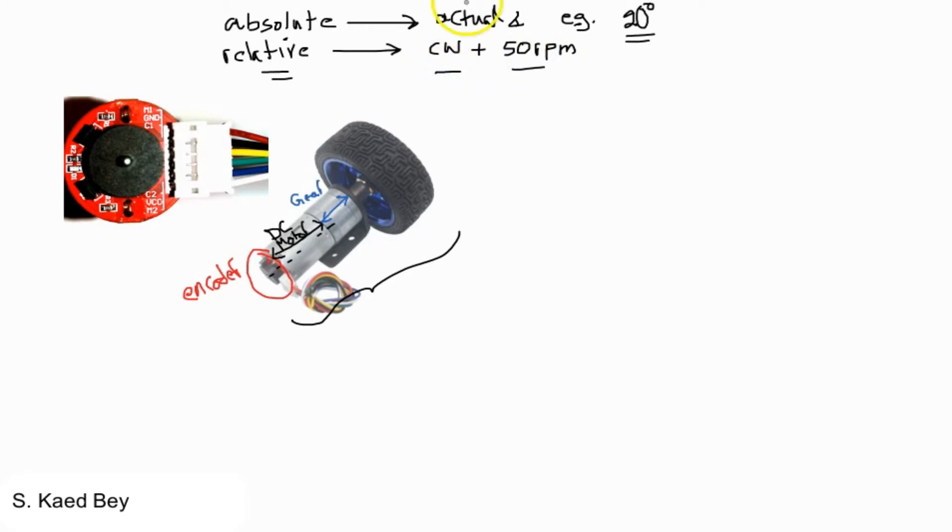Normally the absolute encoders are large, complicated, and more expensive than the relative encoders. The relative encoders could be optical or magnetic.